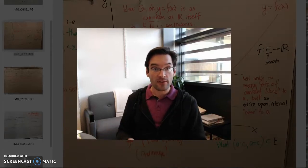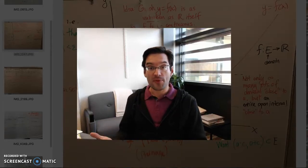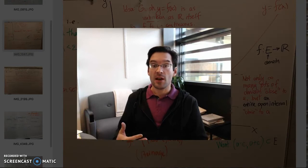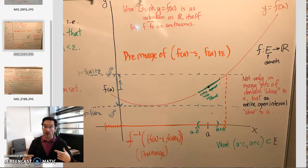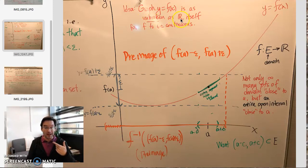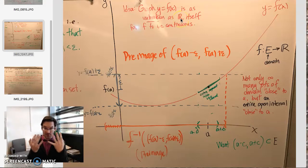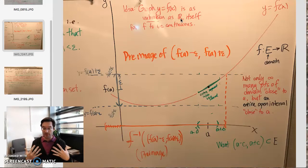Here's a recap of what we talked about today in class regarding open sets, continuous functions, and the three faces of continuity. First, we talked about graphs and the intuition we want for continuous functions: the graph of a continuous function should be just as unbroken as the real line itself. It can't have gaps like the rational numbers or the integers — we want it to have that nice completeness property.